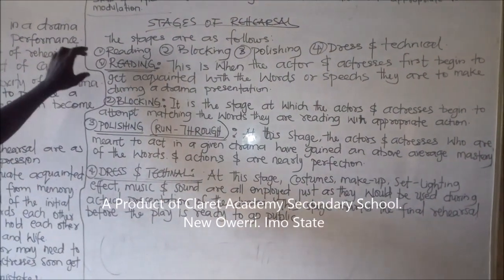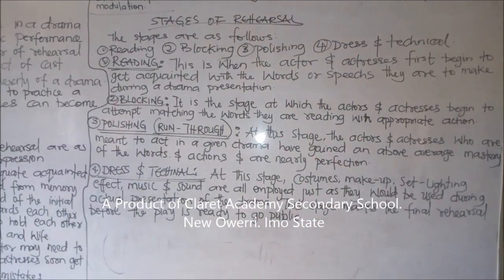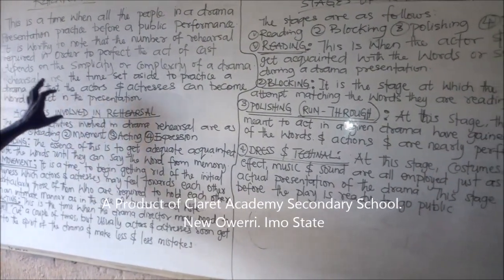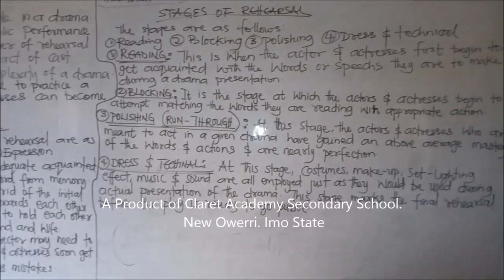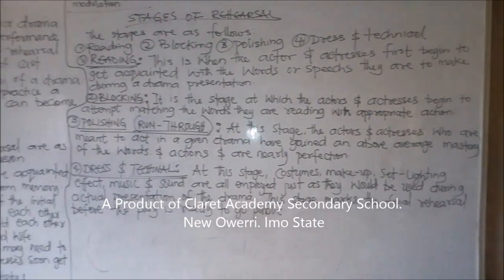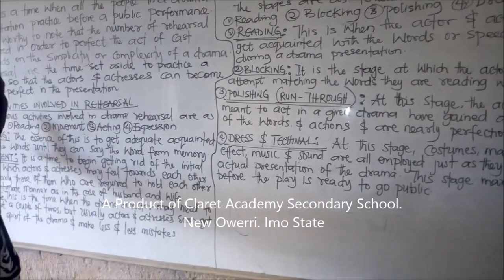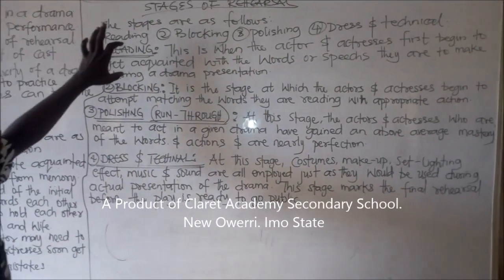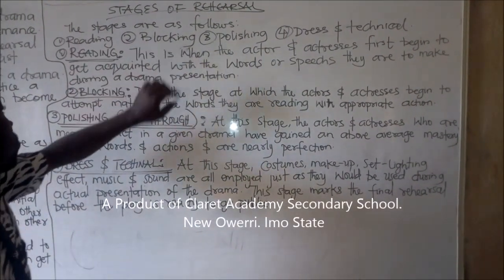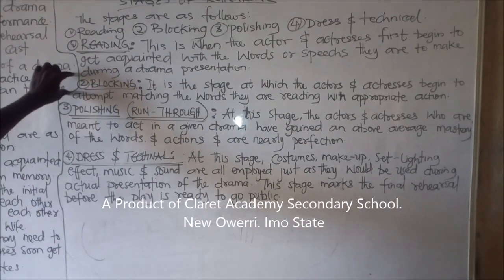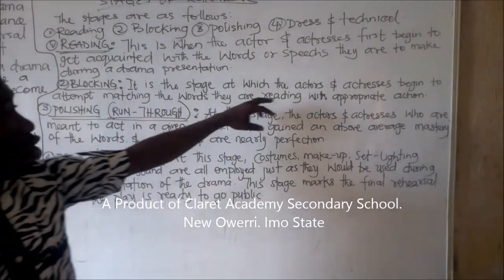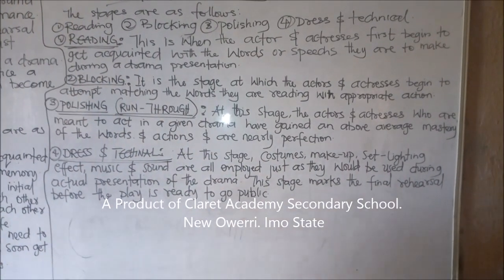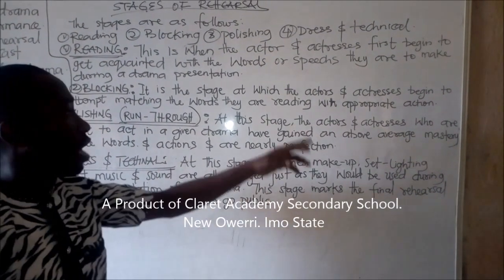Number one, reading, is in line with the activities involved in rehearsal — they are interlinked with each other. Number two is blocking. It is the stage at which the actors and actresses begin to attempt matching the words they are reading with appropriate action.